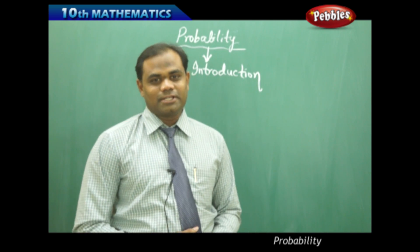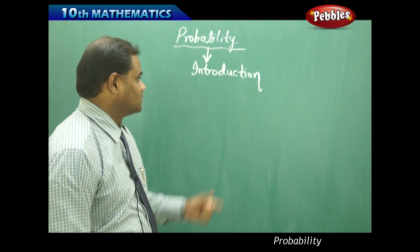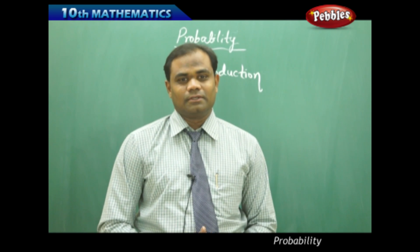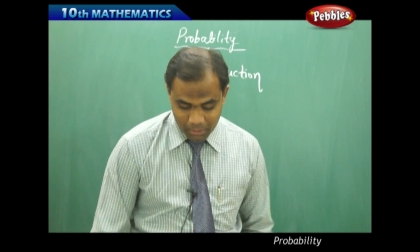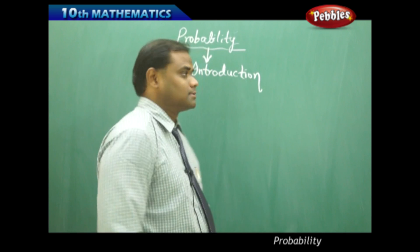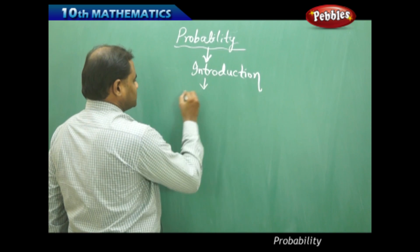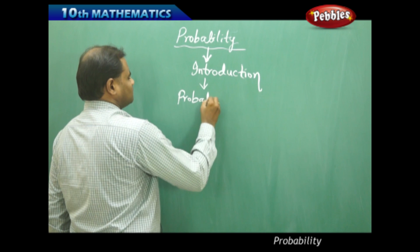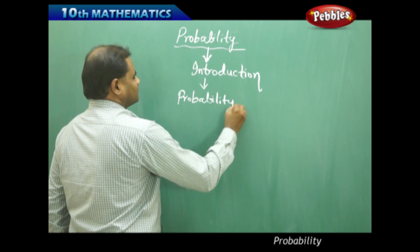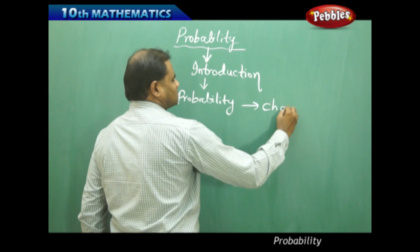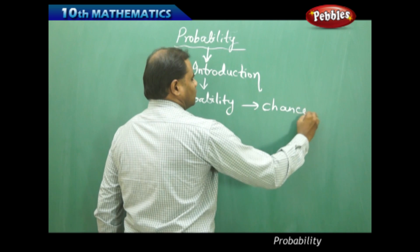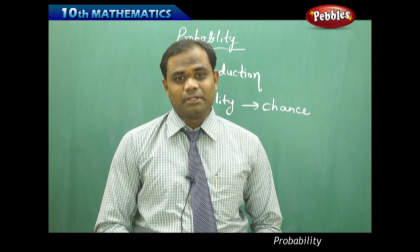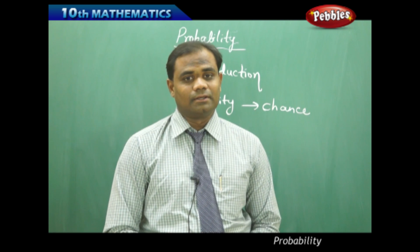Today's topic for the session is probability. What is probability? In general, we call probability as a chance. Probability is said to be a chance of happening and not happening. So what do you mean by happening and not happening?